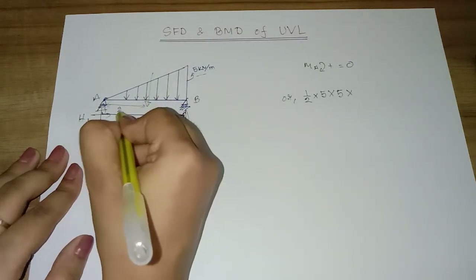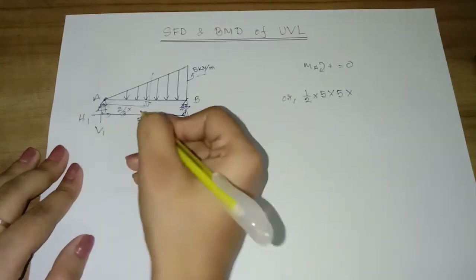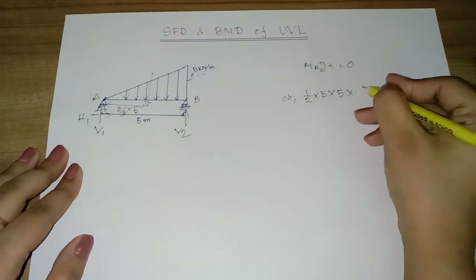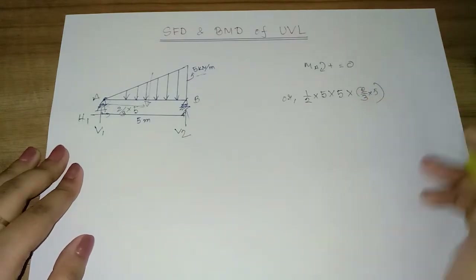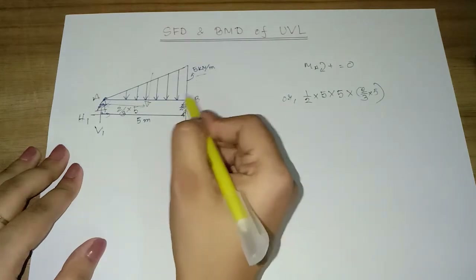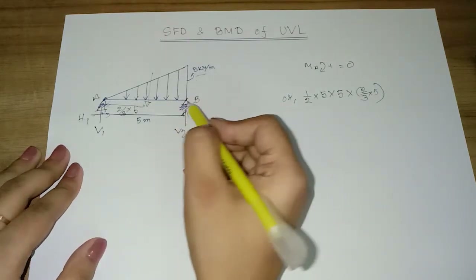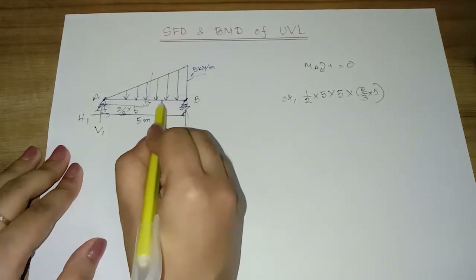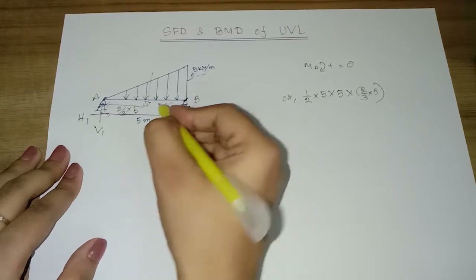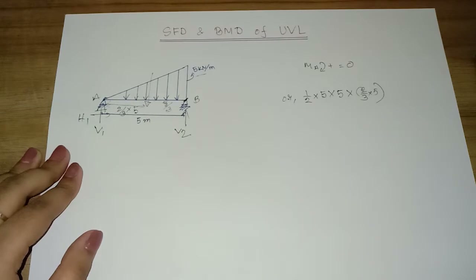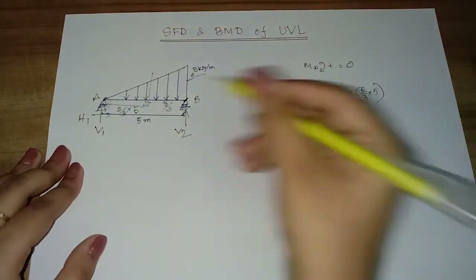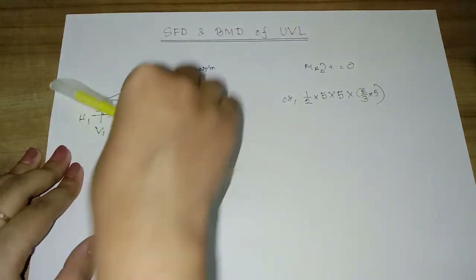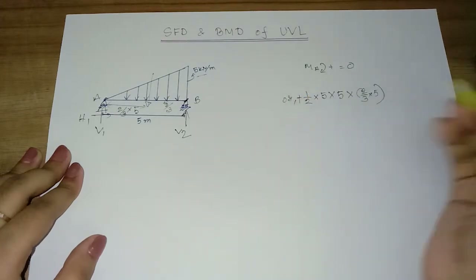The distance is two-thirds into 5, which equals 10/3. The moment is calculated as the resultant force times this distance. For the roller support reaction V2, taking moment about A: V2 acts at 5 meters. The base point for a triangular load uses one-third distance. The moment is clockwise, so it is positive.